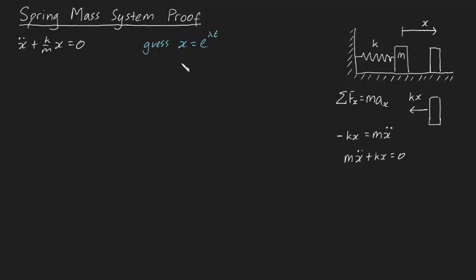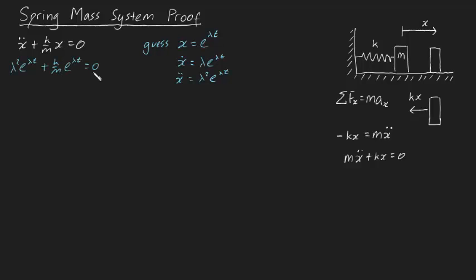So if we go ahead with this guess, we'll need to find the double derivative of x to plug it in. The first derivative will be lambda e to the lambda t, because lambda is a constant, and x double dot will be lambda squared e to the lambda t. So let's plug this in: we get lambda squared e to the lambda t plus k over m times e to the lambda t equals zero. Now we're going to factor out an e to the lambda t, giving us e to the lambda t times by lambda squared plus k over m equals zero.